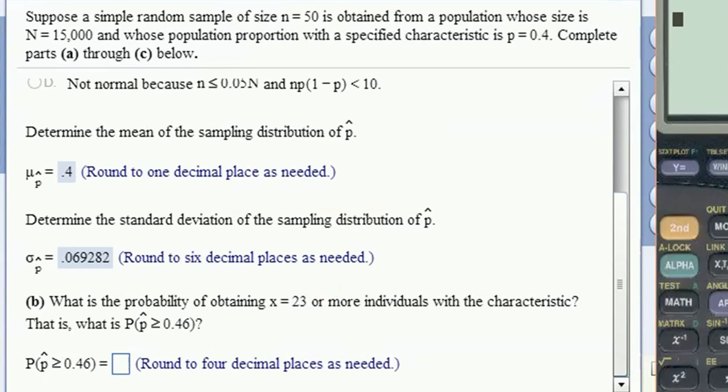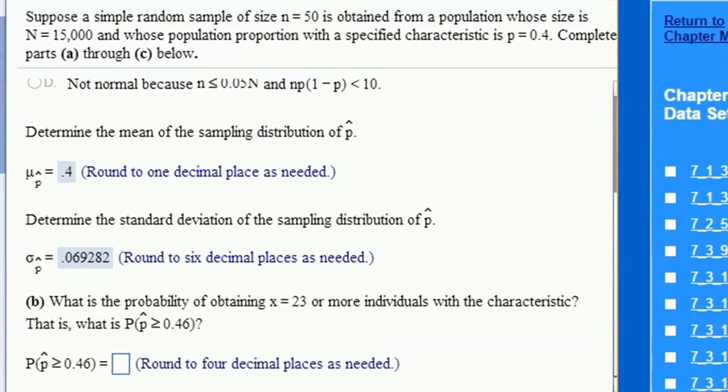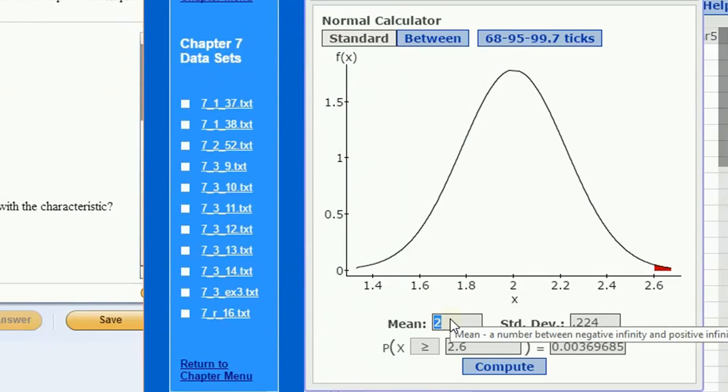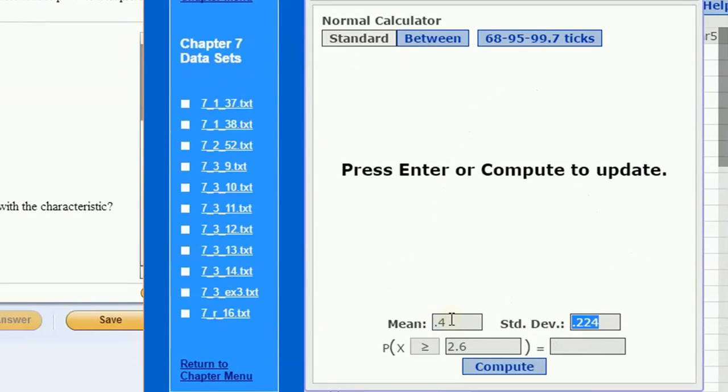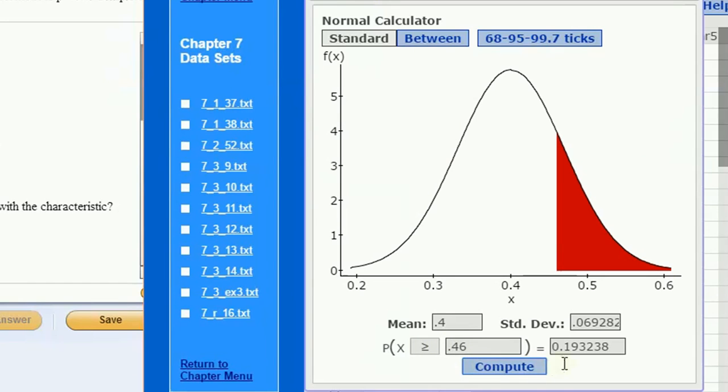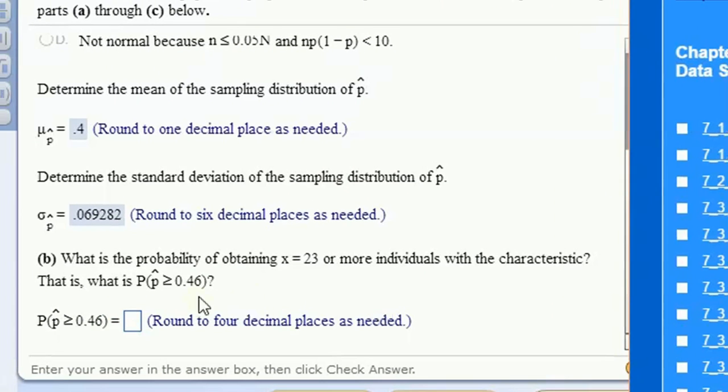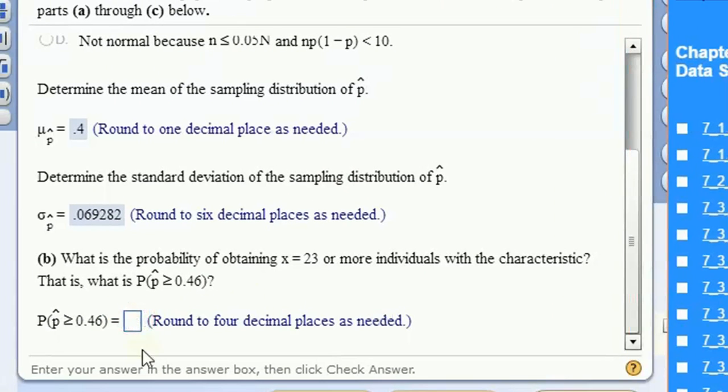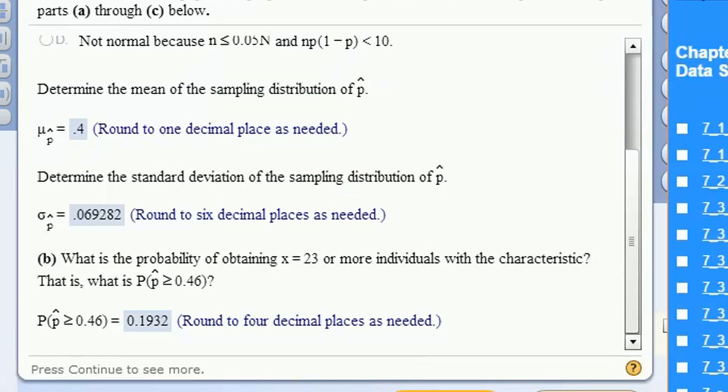Now we can answer a probability question. Let's type in the mean, 0.4, the standard deviation, 0.069282. And what's the probability that we get a value greater than 0.46? Well, that probability is 0.1932. There we go.